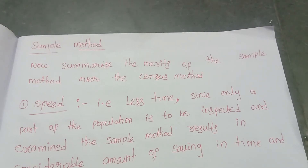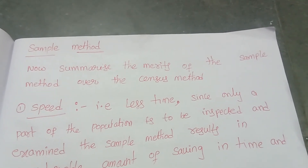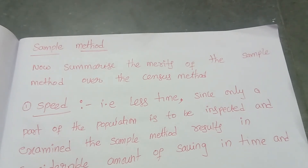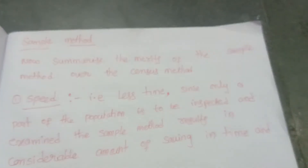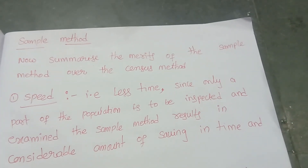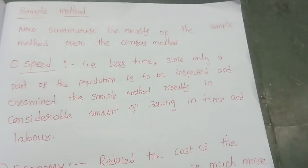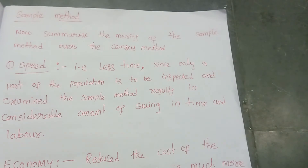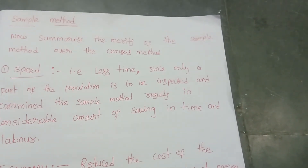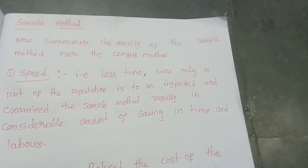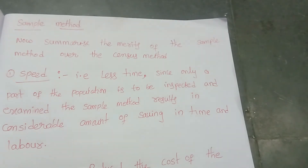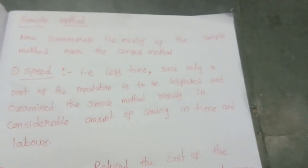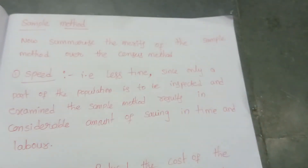Coming to the sample method — in the sample method we don't take the entire population. We use methods like simple random sampling, stratified random sampling, and systematic sampling. The first merit of sample over census is speed: since only a part of the population is inspected, the sample method results in considerable saving of time and labor. For example, average of 10 members takes only 5 to 10 minutes, whereas 55 members takes half an hour.